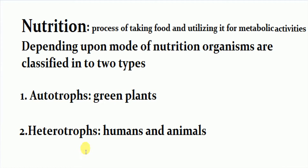The next type is heterotrophs. Organisms which cannot prepare their own food are called heterotrophs. Heterotrophs depend on other organisms for their food. For example, humans and animals cannot prepare their own food and depend on plants and other animals. This mode of nutrition is called heterotrophic nutrition.